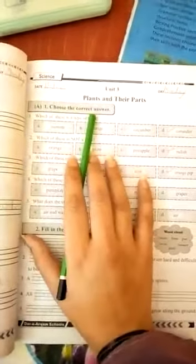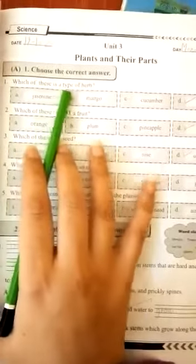Question number one is choose the correct answer. So that's a multiple choice portion. Multiple options are given and you have to choose the correct one. Question number one is, which of these is a type of herb?